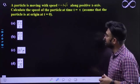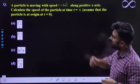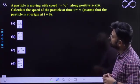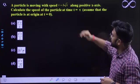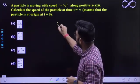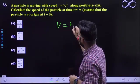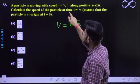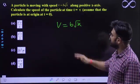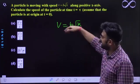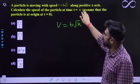A question came in your examination like a particle is moving with the speed of v = b√x along the positive x-axis and calculate the speed of the particle at t equal to τ time.